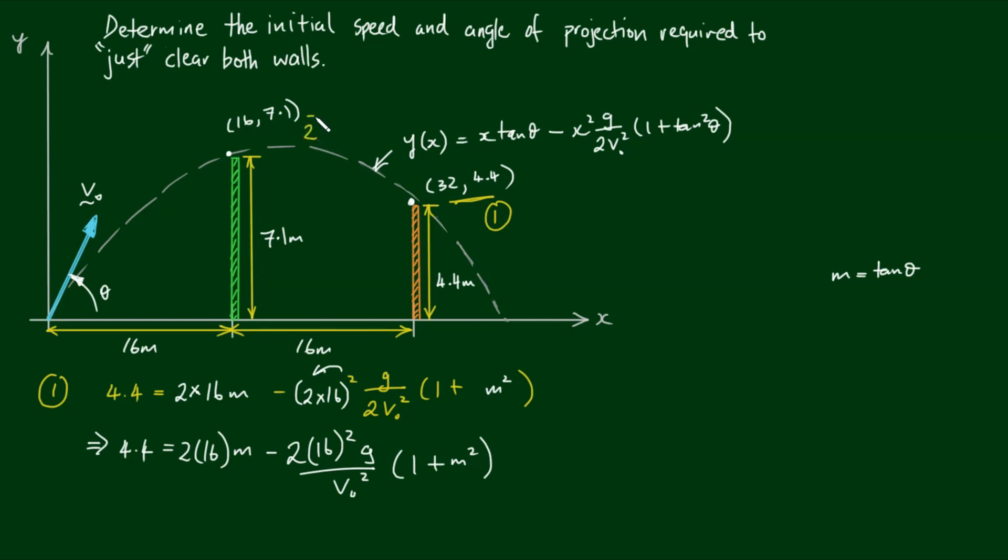For equation 2, we have y equals 7.1, that equals 16m minus 16 squared g over 2v0 squared times 1 plus m squared.